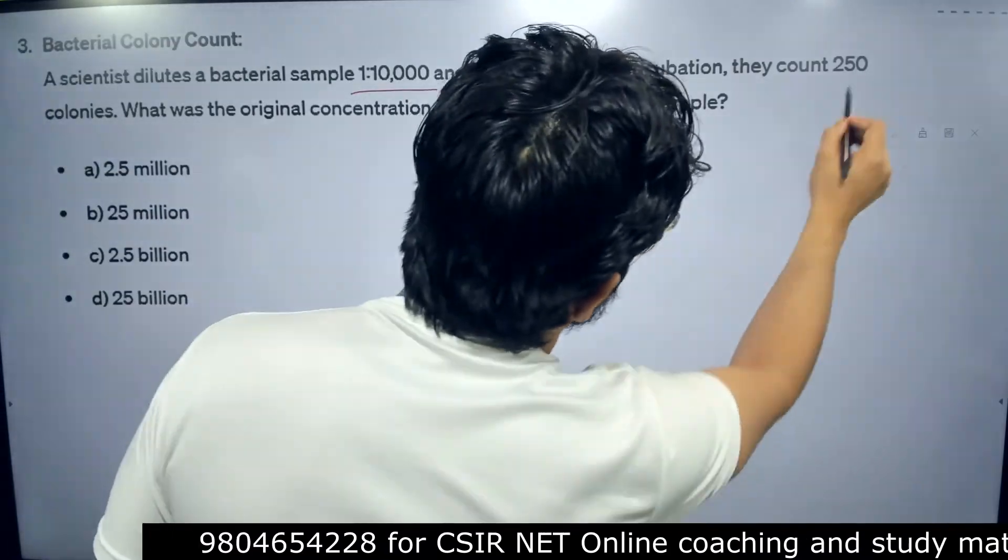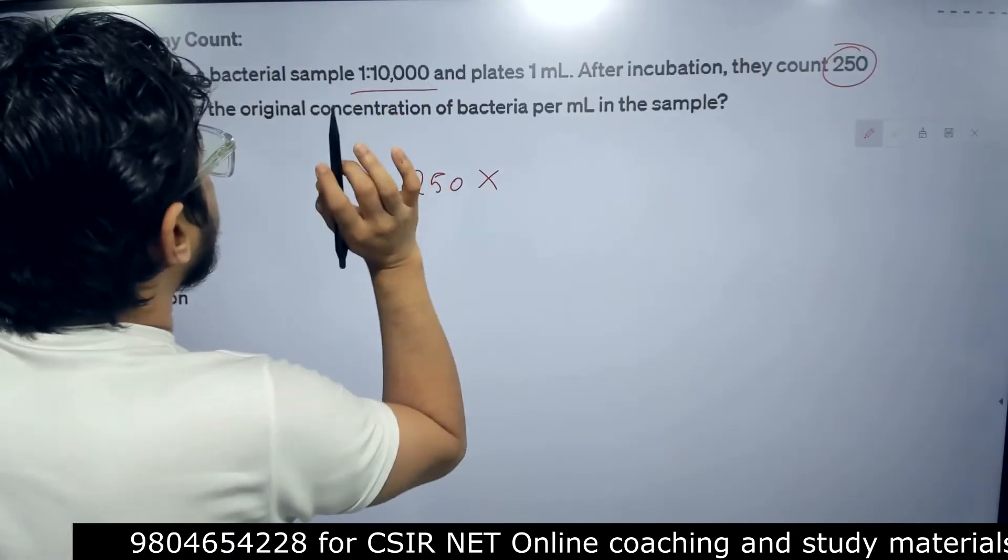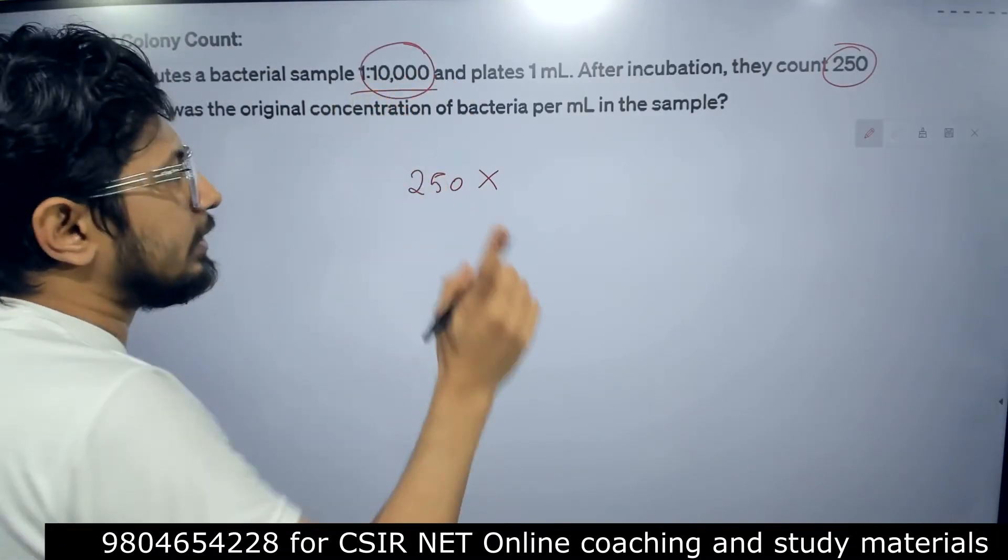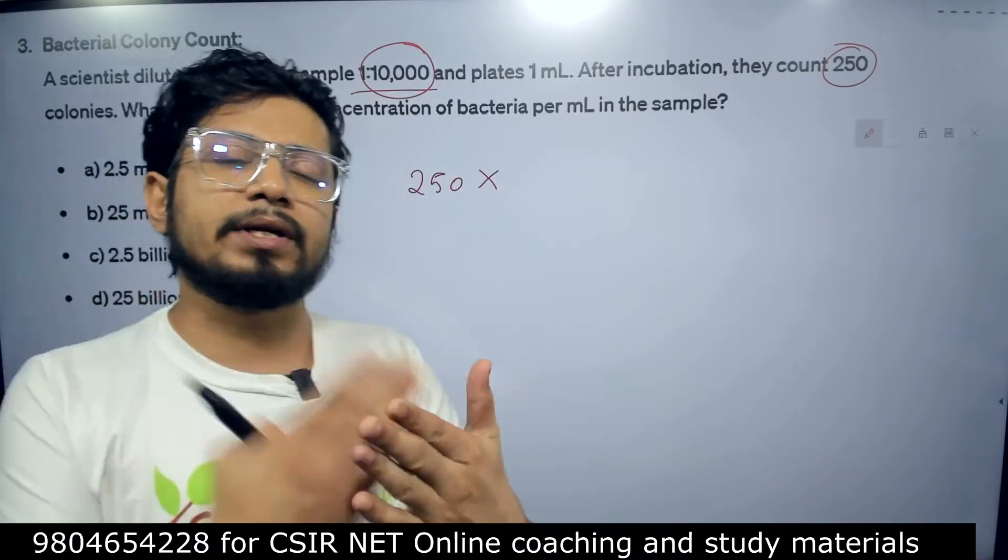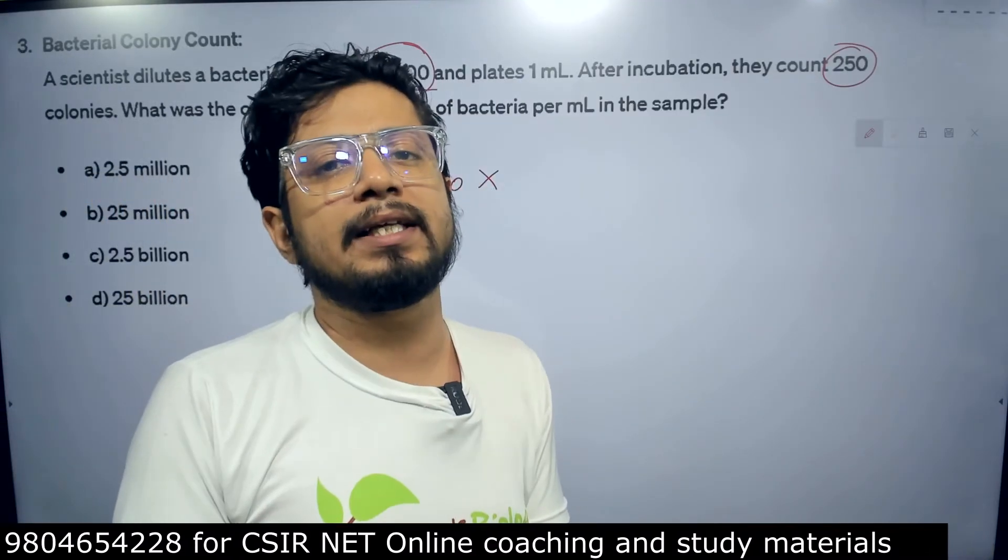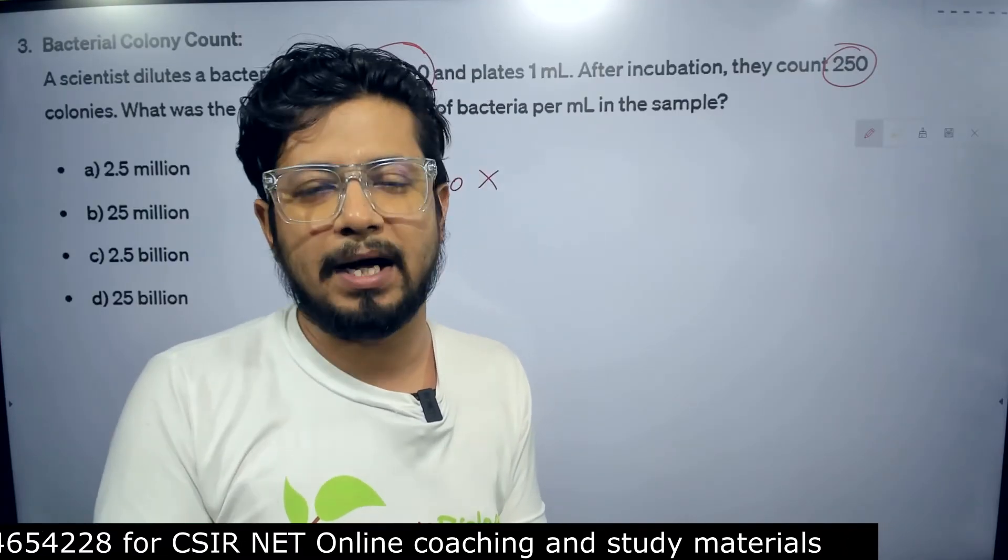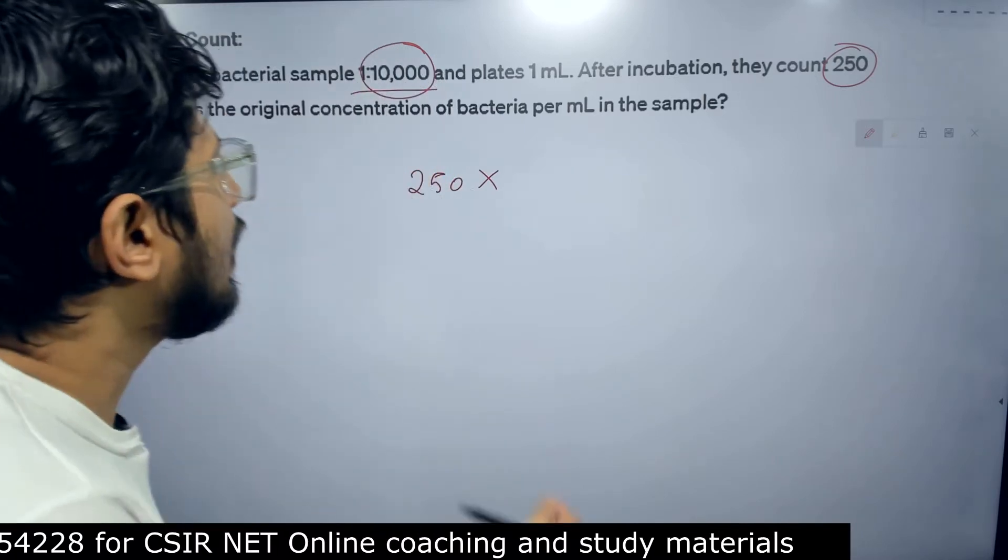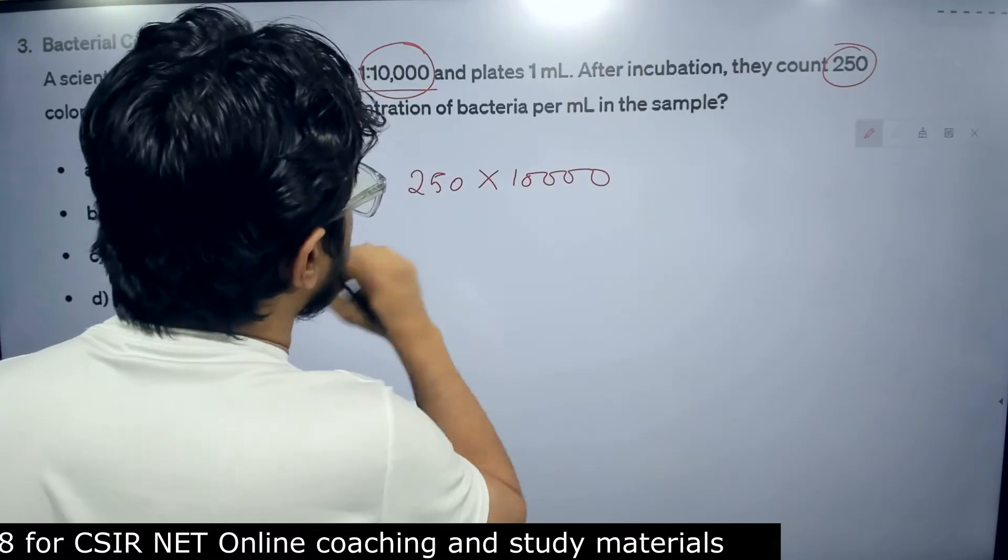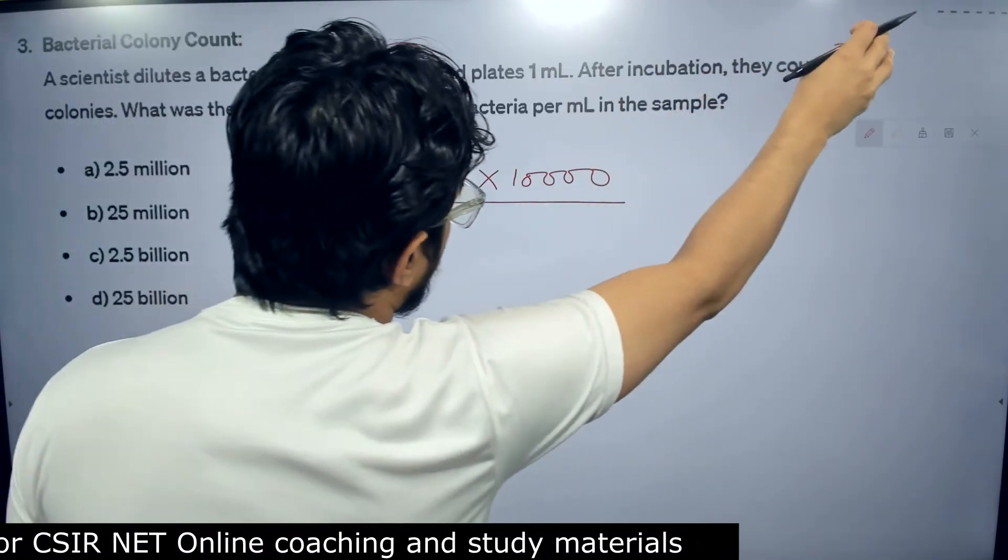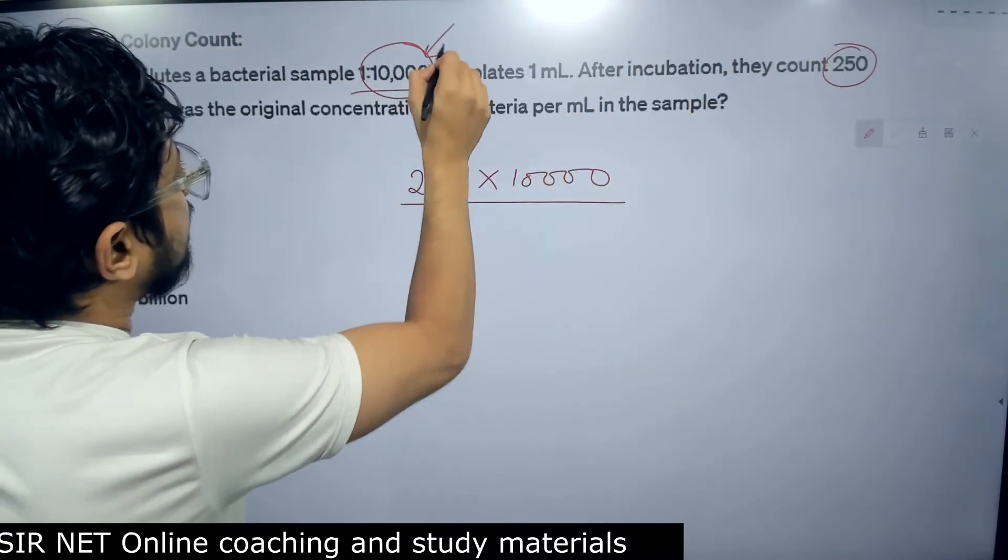That means if we started with 250 colonies, 250 colonies and it was diluted that 10,000. 1 is to 10,000 means the serial dilution. If you recall the idea of serial dilution, 1 is to 10,000 means dilution was one part of bacteria to 10,000 parts of media or substrate. So 1 is to 10,000, we will do simple multiplication of 10,000. We will do the multiplication of the total count of the colony, 250 into the total dilution factor that is 10,000.